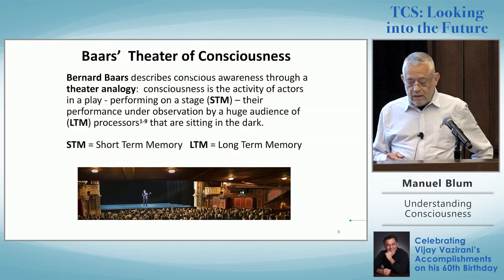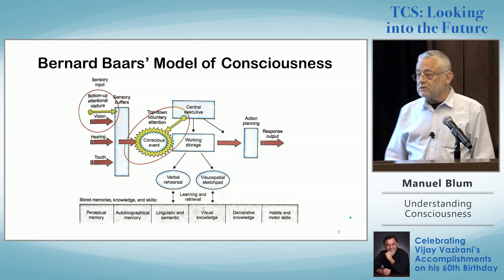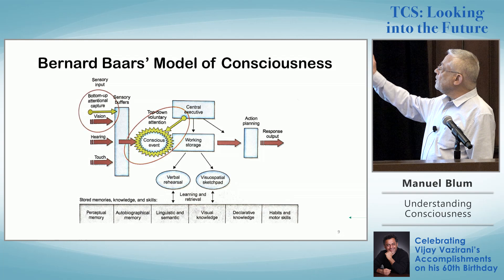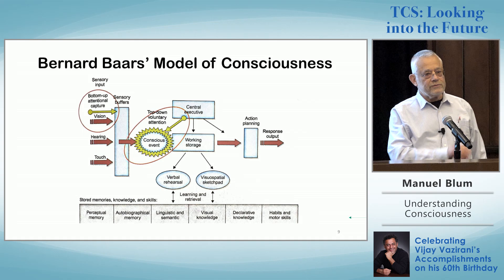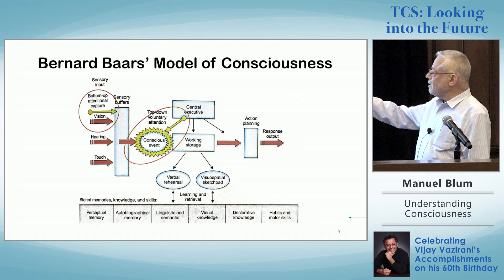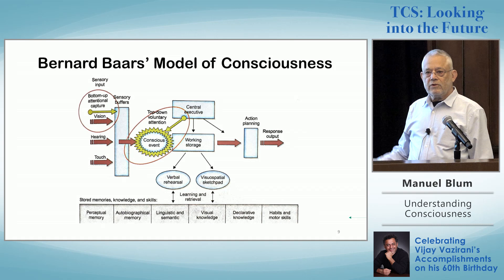Baars has a model of consciousness. You can see the inputs coming in on the left, the outputs going off to the right. There is a central executive at the top, which is like the finite state part of a Turing machine. There is working memory, and then there is a lot of long-term memory and special skills at the bottom. This is his model — it's not very formal, it's informal.